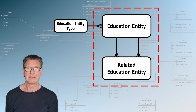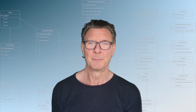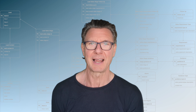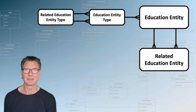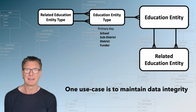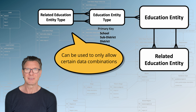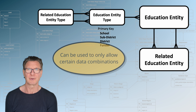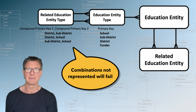What's really cool with this construct is that it allows pretty much anything to be modeled — any kind of complex relationship in n dimensions. But what makes it extra cool is that we can apply it on any relationship. For example, what happens if we apply it on the Education Entity type and make a Related Education Entity Type? One use case could be to enforce data integrity by reducing data entry errors. We can configure the Related Education Entity Type to only allow certain relationships or certain combinations of relationships.